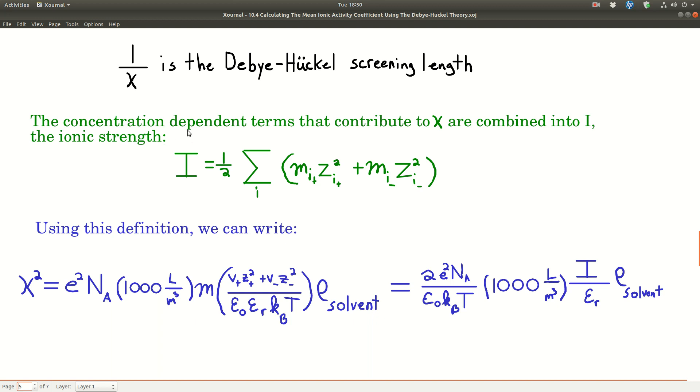It's convenient to take all the concentration dependent terms and group them together into something called the ionic strength, capital I. It looks like this: the molality of the cation times the charge on the cation squared, plus the molality of the anion times the charge on the anion squared, times one half.